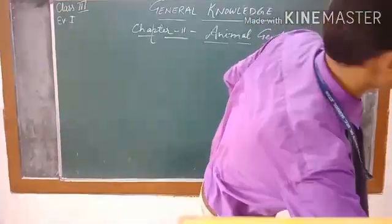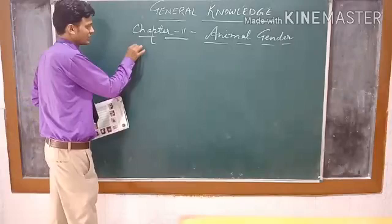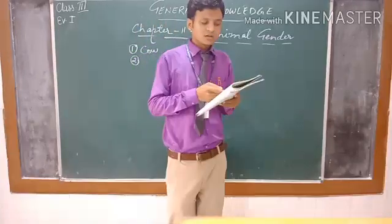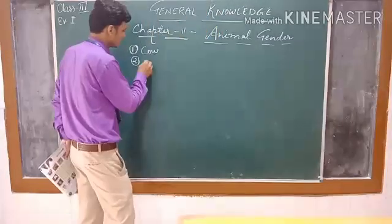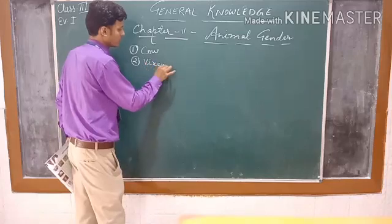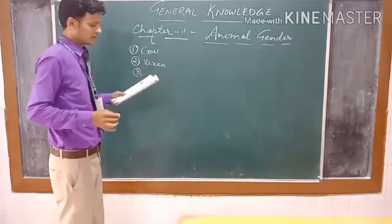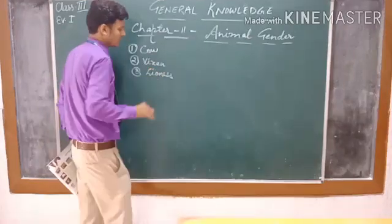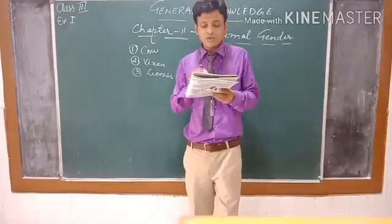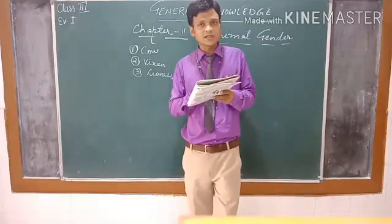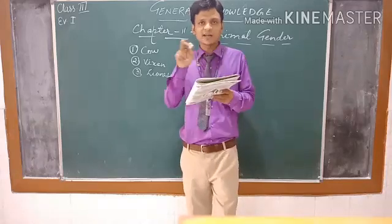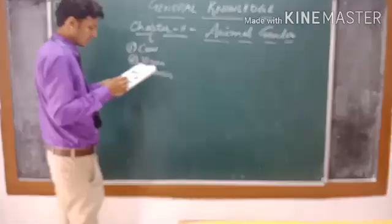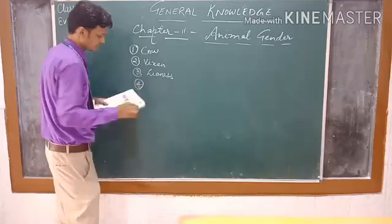Now I am writing down first. First one is cow. You can see in your book — first one is cow. Second one is vixen. Third one is goose. These all are the feminine gender and you have to identify the masculine gender from the grid. You have to underline in the grid, or the crossword puzzle. Fourth one is bitch.